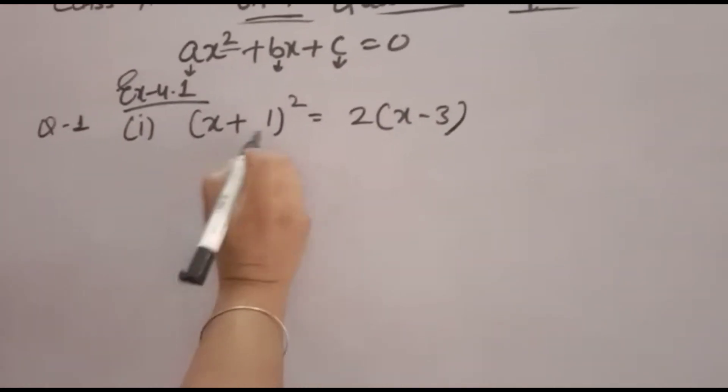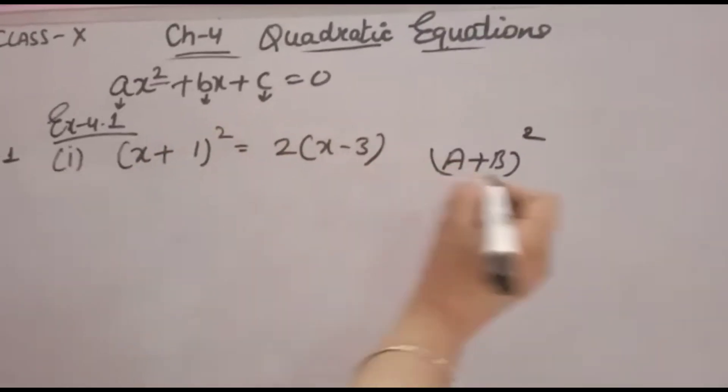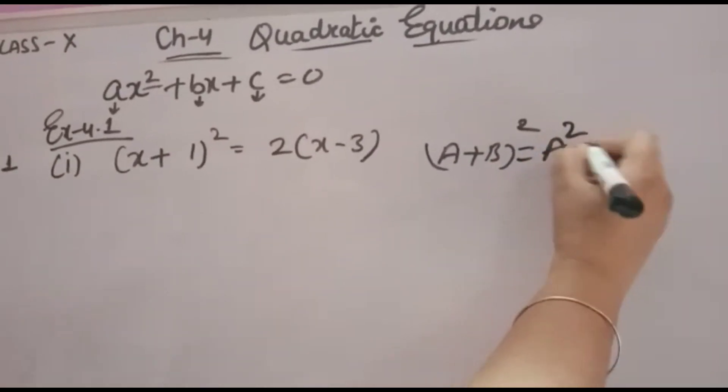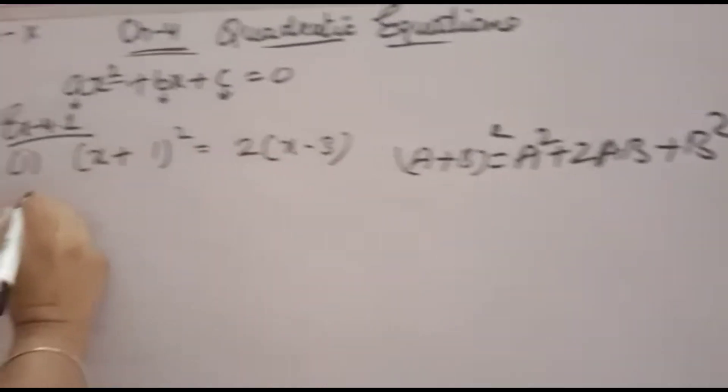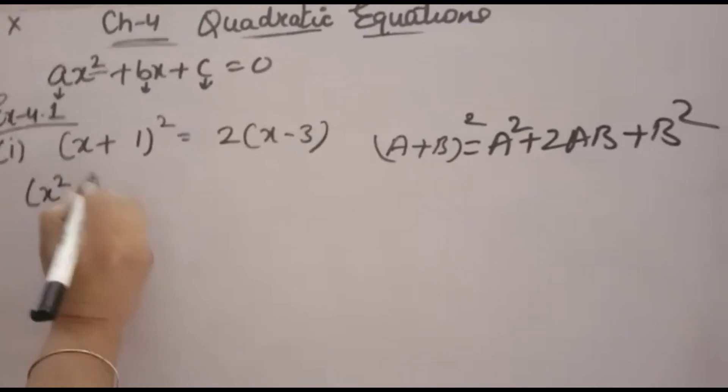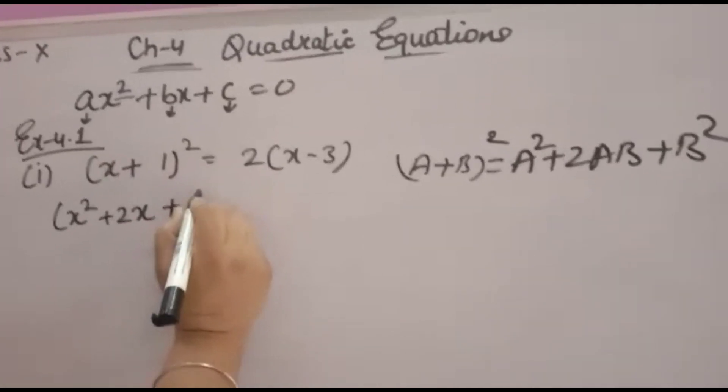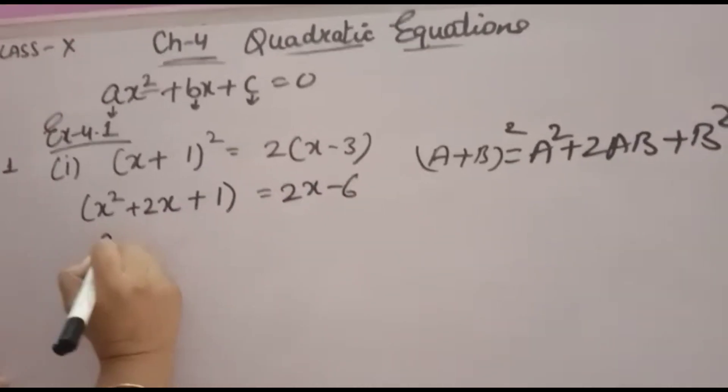So what you will do? By (a+b) whole square formula, you will open (x+1) whole square. Formula is a² plus 2ab plus b². That formula you will use here. In right hand side you will get x² plus 2 into x into 1, 2x plus 1². 1 equal to, open the bracket, you will get 2x minus 6.